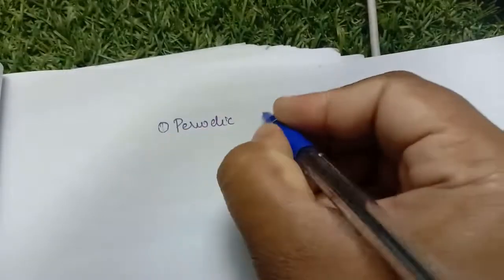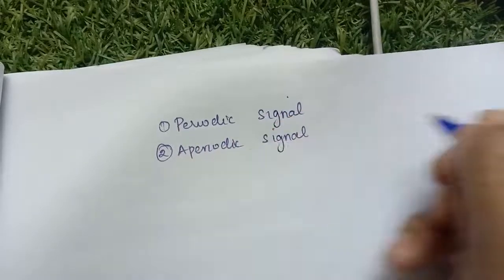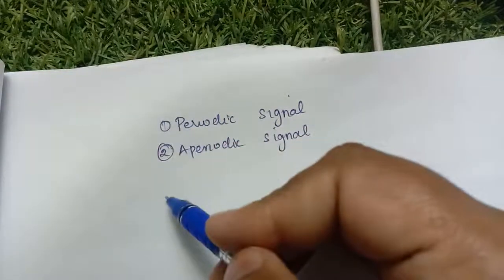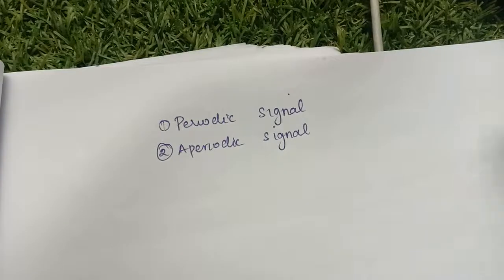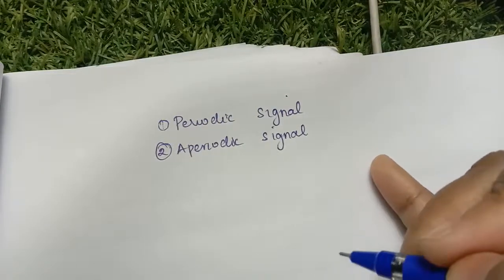Good evening. Today we are going to see about two types of signals: one type is called a periodic signal and another type is called a non-periodic (aperiodic) signal. In today's class we are going to see only the periodic signal and the aperiodic signal.